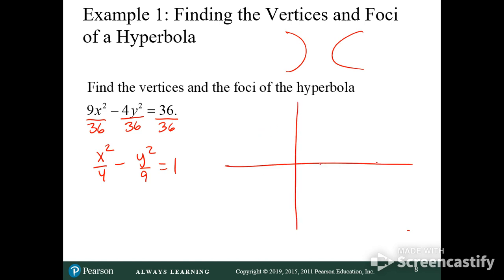So the center is at zero zero. You go one two, here's a vertex. One two, here's a vertex, because it's the square root of a. So then your asymptote is going to be at positive and negative b over a, which is b is three, a is two, so three over two. So zero zero, three two, negative three negative two.